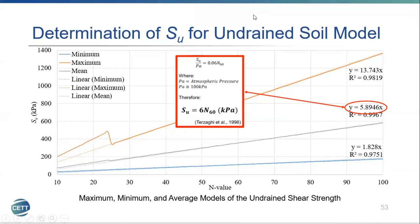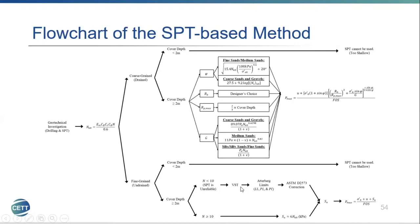Taking all the determined correlations into account, an algorithm flowchart was created for the SPT-based method. Starting with the correction for N60, the soil type can be distinguished. Limitations were included for the SPT, such as when the bore is too shallow or when the N-value is too low, in which case the gain-shear test results are suggested instead. Following these algorithms, a designer can estimate Pmax using the N-value.